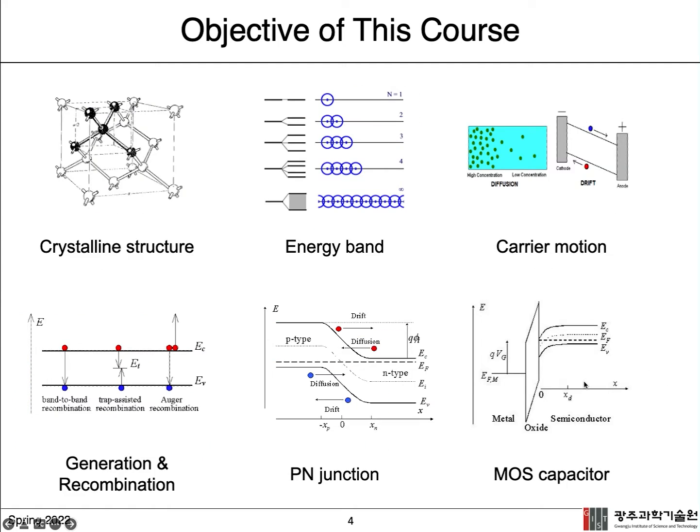So in this course, we will learn the most parts of semiconductor physics, from the silicon crystalline structure to the energy band diagram, which consists of energy band formation, carrier motion, generation and recombination, p-n junction, and metal oxide semiconductor capacitor.